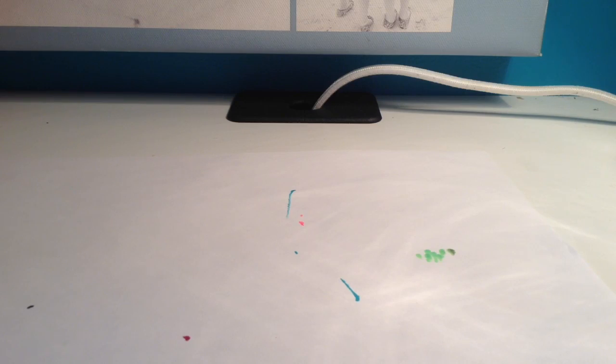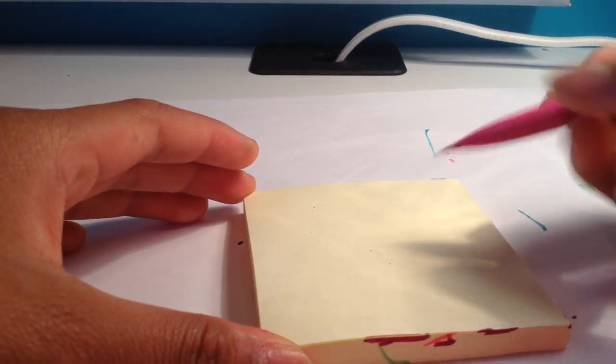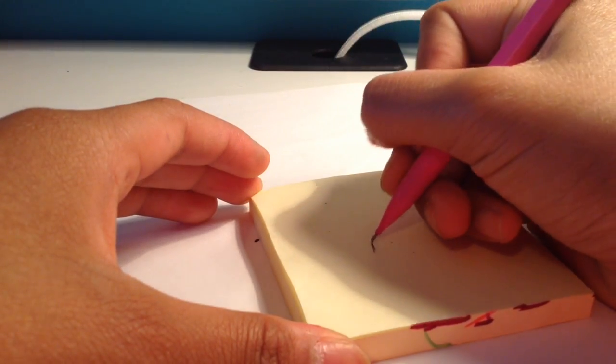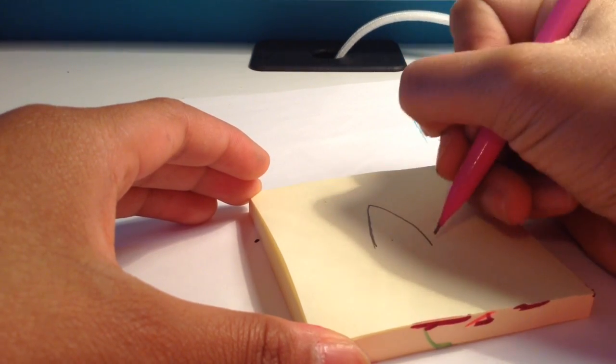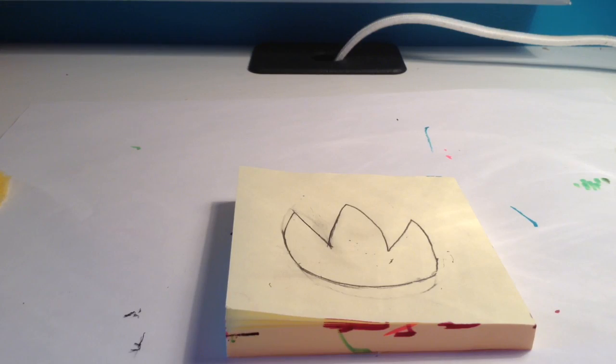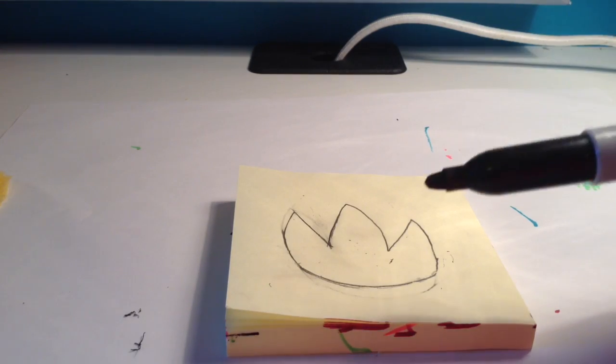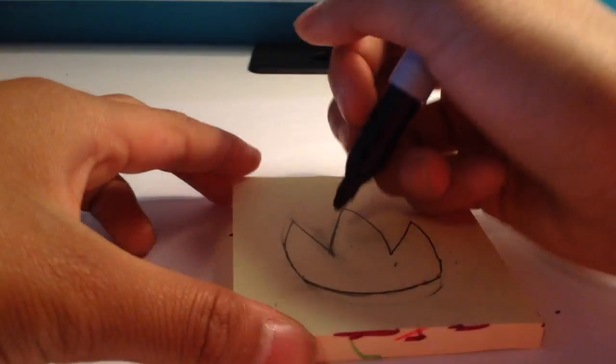So you're going to want to have a white piece of paper underneath and you're going to draw a picture, whatever picture you want, on the post-it note. And once you're done drawing that, you're going to take a black sharpie and you're going to outline what you drew.